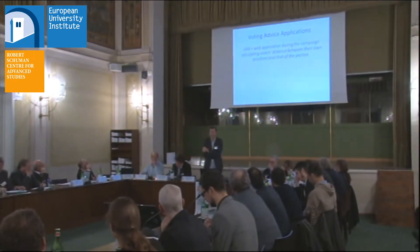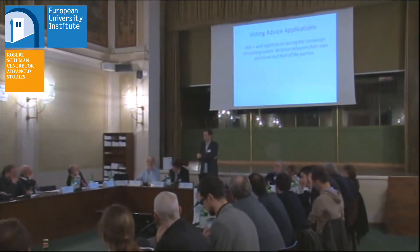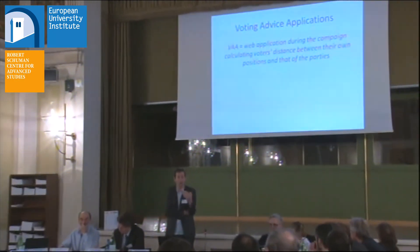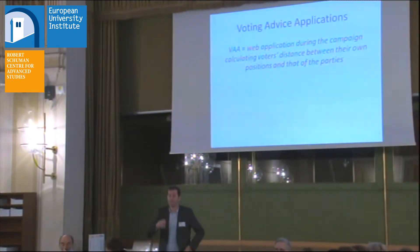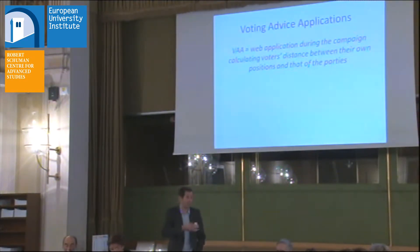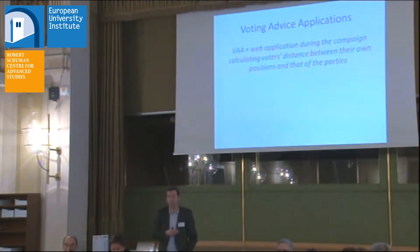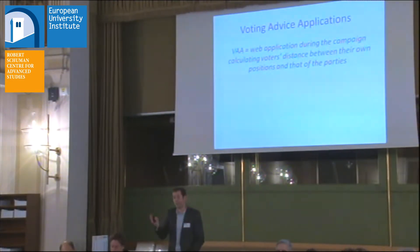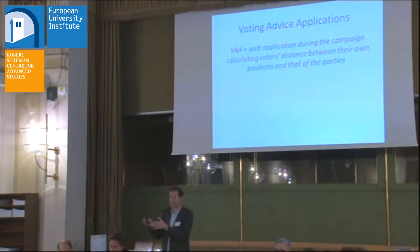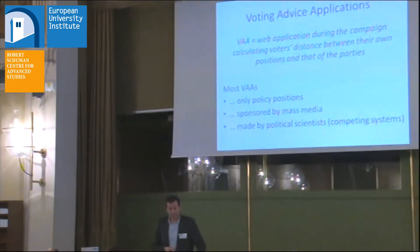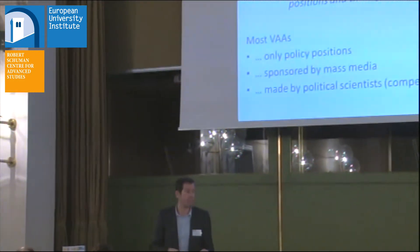What are voting advice applications? You all know about this, especially in many countries they are extremely popular. These are web applications that are online during the campaign and calculate the distance between a voter and a party. The distance is calculated based on a number of statements — 20, 30, 36, 50 statements in some voting advice applications. Based on party leaders' answers or party manifestos, the system calculates the distance. What is typical for VEAs is that they only contain policy positions; it's not about leadership.